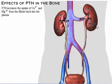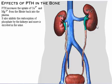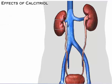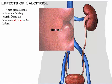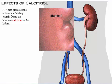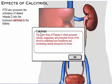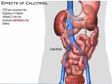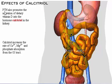In the kidney, parathyroid hormone increases the uptake of calcium ion. It also inhibits reabsorption of phosphate by the kidneys, causing greater phosphate excretion in the urine. Parathyroid hormone also promotes the activation of dietary vitamin D into the hormone calcitriol in the kidney, with the liver also involved in vitamin D activation. Calcitriol increases the rate of calcium ion and phosphate absorption from the gastrointestinal tract.